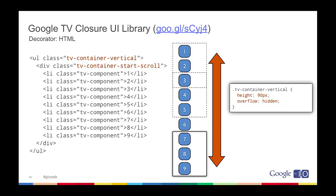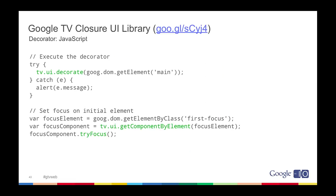Lastly, JavaScript is the last piece you'll use to enable this library. You're going to be calling a single method: tv.ui.decorate, and within that you pass in the root parent HTML node where it's then going to scan through all of its child elements and look for these specially decorated class names. Then at the bottom, you're essentially just calling try-focus on the first element that you want to start your focus on.